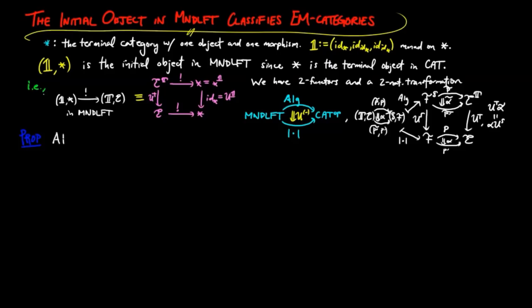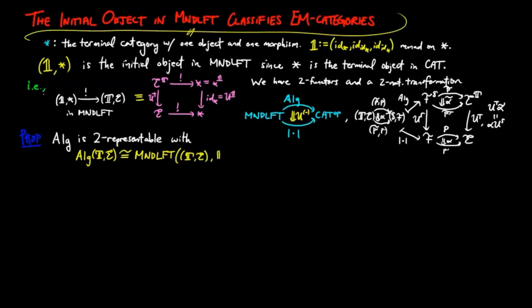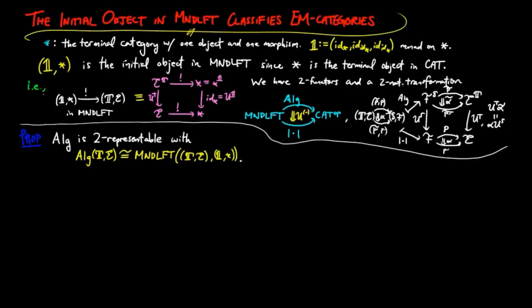Moreover, the algebra 2-functor is 2-representable, with the category of algebras on TE isomorphic as categories to the HOM category in monad lifts of functors from TE to the initial object, and is natural in component TE. For the proof, we first show that the following category is isomorphic to the Eilenberg-Moore category for the monad T.